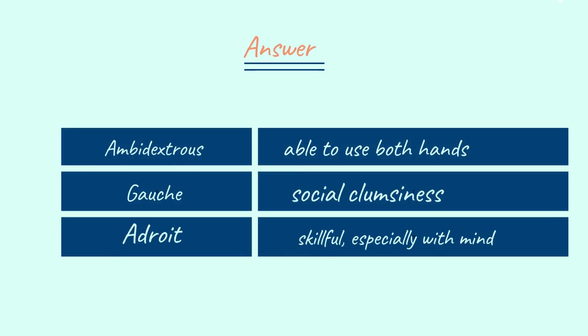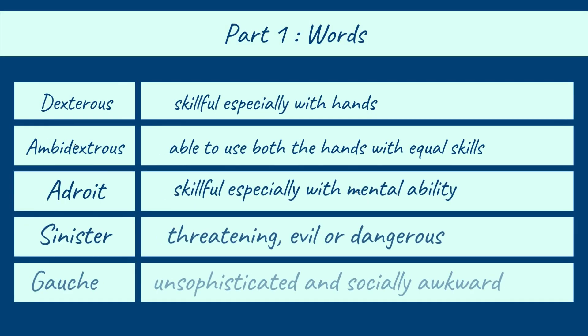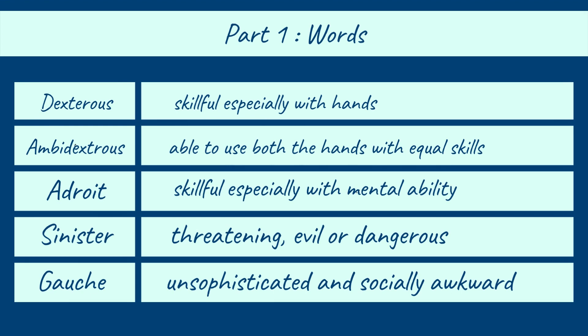The answers are on your screen now. Ambidextrous — able to use both hands. Gauche — social clumsiness. Adroit — skillful, especially with the mind. I hope you would have given the correct answers. Let's quickly revise the 5 new personalities that we learnt: dexterous, ambidextrous, adroit, sinister, gauche. That's all in Part 1 of the video.